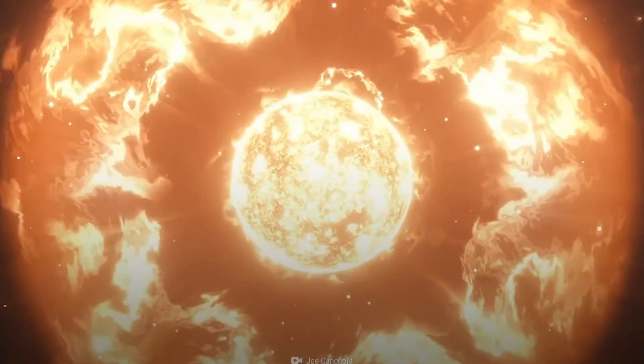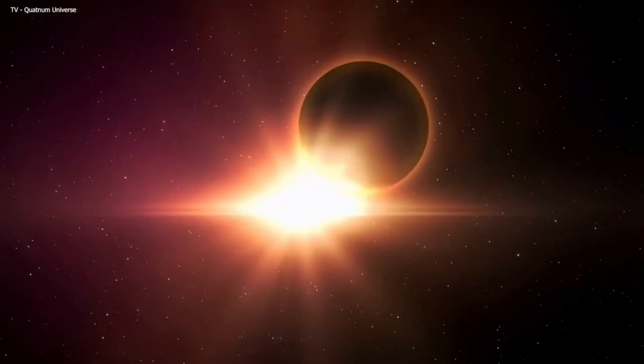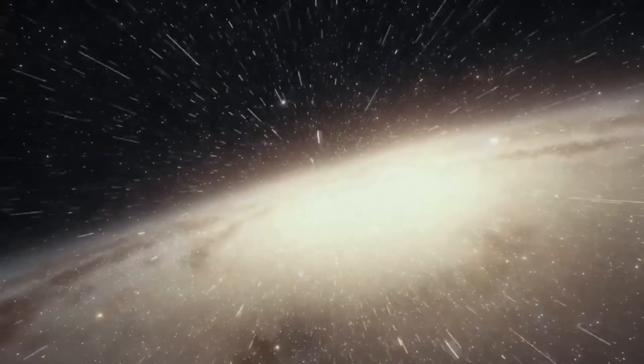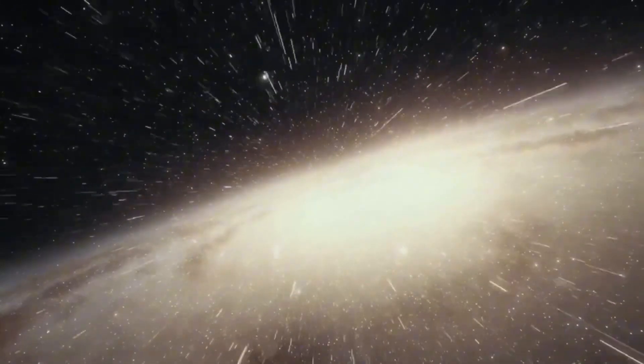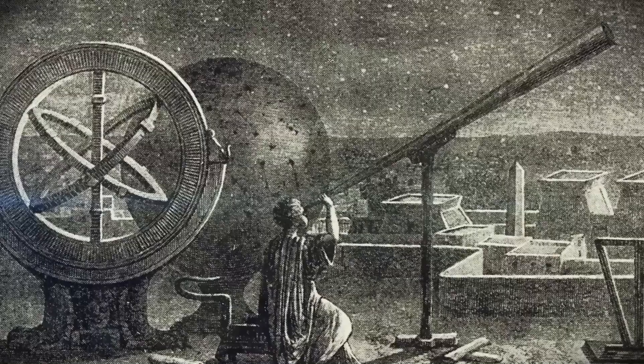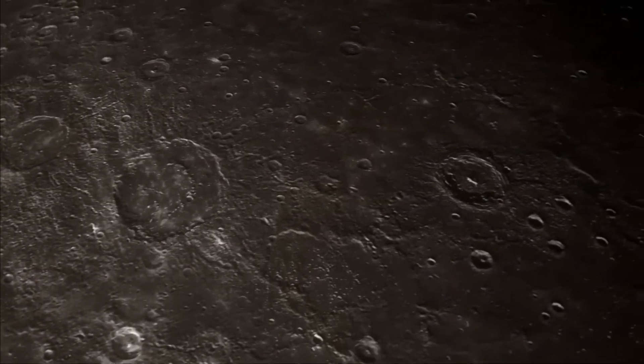Of Jupiter's incredible 80 moons, scientists have officially recognized 57 of them. The remaining 23 moons will soon also be recognized as official moons, although the International Astronomical Union still needs to identify and name them. Although Jupiter has a large number of moons, the four largest are particularly significant.